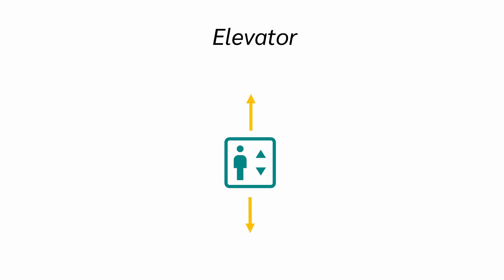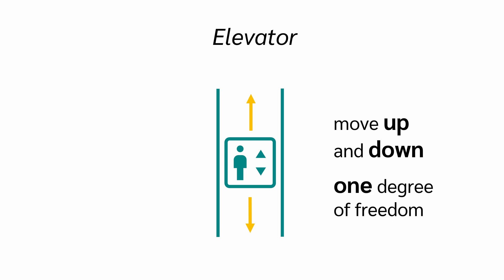An elevator just can move up and down because it's constrained by the shaft. Therefore, because it can just move up and down, it only has one degree of freedom.